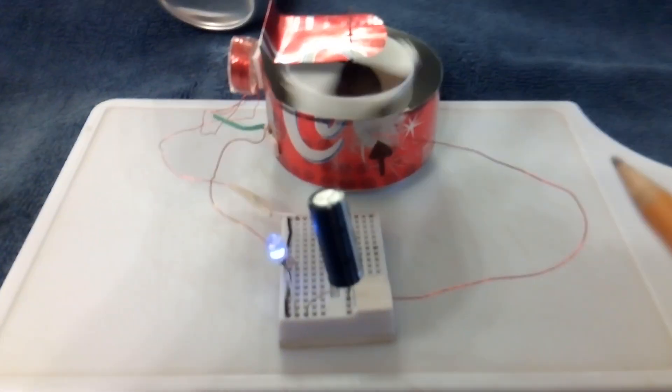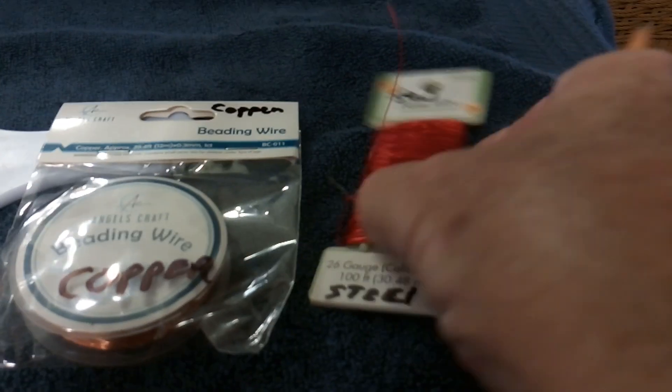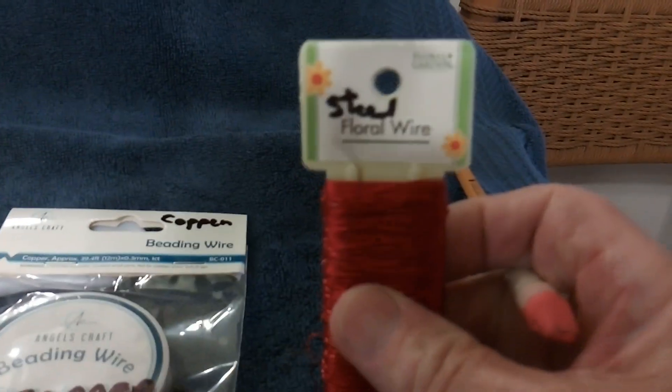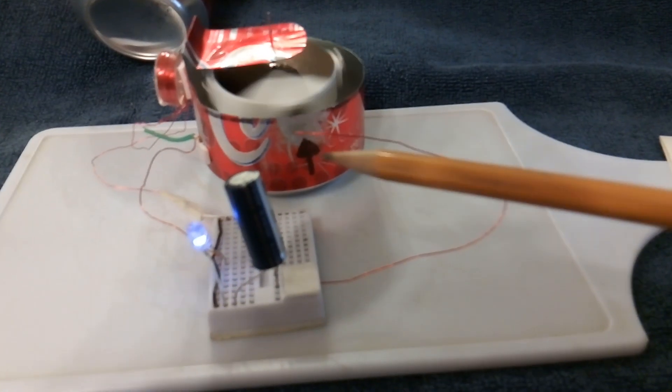When the magnet goes by, I'm using this steel floral wire that you can get in the craft store that's magnetically attracted, it's ferrous. And as the magnet goes by the rotor, it pulls on that wire, makes the contact.